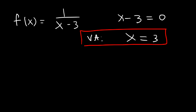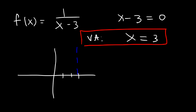And if you were to graph this function, it would look something like this. So at x = 3, we would have a vertical asymptote. On the right side, the graph is going to be above the x-axis. On the left side, below it.